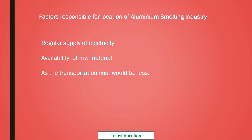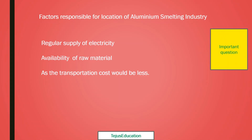Factors responsible for the location of the aluminium smelting industry: regular supply of electricity, and availability of raw material so that transportation cost will be less. Please write a small introduction, then these three points, and a conclusion according to the mark — 2 mark, 3 mark, or 5 mark. For example, for regular supply of electricity: the regular supply of electricity is a must for the production of aluminium; if the supply is irregular, it will affect production. Like that, you have to elaborate.